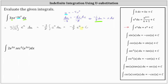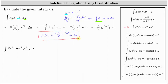Writing this back in terms of x, we know u is equal to negative 4x squared, giving us negative 3/8 times e to the power of negative 4x squared plus c as the antiderivative. We identify antiderivatives using big F of x — this is the family of functions whose derivative equals the given integrand function of 3x times e to the power of negative 4x squared.